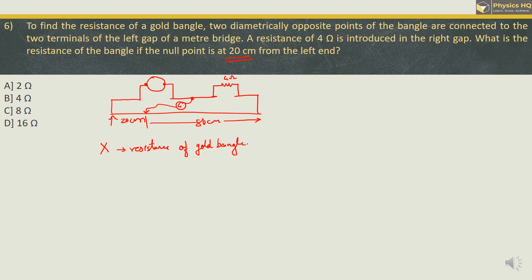So the remaining will be 80 cm over here. Now let us say that X is the resistance of the gold bangle. So the two halves of this gold bangle will be having resistance X by 2 and X by 2, and they are connected in parallel over here. So the resultant parallel resistance will be multiplication of the two in the numerator and addition of the two in the denominator. So this is equal to X square by 4 and X over here. So X and X will be cancelled and we are left with X by 4. So the resultant resistance in the left gap is X by 4. And we know that resistances are directly proportional to the length. So X by 4 divided by resistance on the right, this will be equal to length on the left hand side is 20 cm, and to the right is 80 cm.